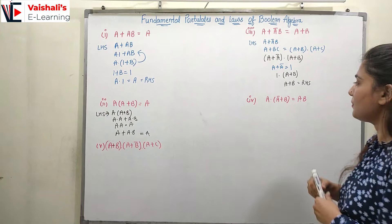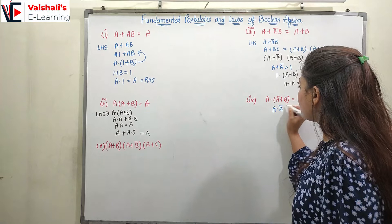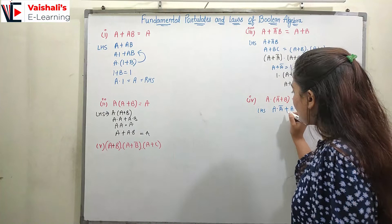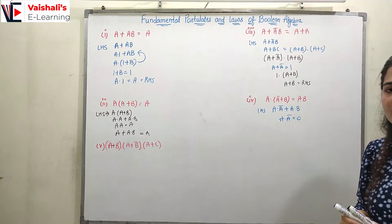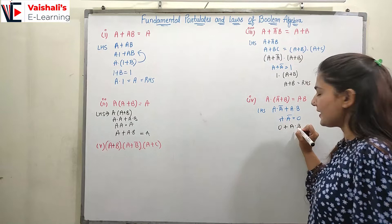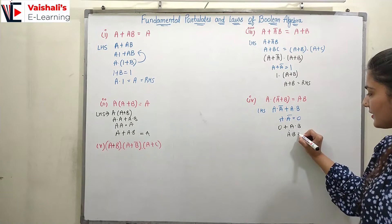Next: a·(ā + b) = ab. Expanding the left hand side: a·ā + a·b. Now a·ā = 0 by the complement property. So we get 0 + a·b. Adding zero to a·b gives a·b only. So our right hand side is equal.